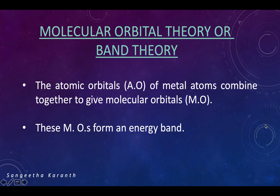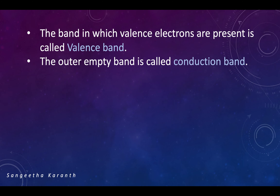Coming on to molecular orbital theory or band theory. We know that atomic orbitals will combine together to give molecular orbitals. These molecular orbitals form what is known as the energy band. In metals and related compounds we first speak about two types of bands, that is the valence band and the conduction band.